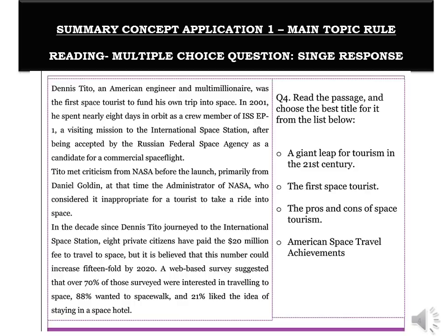A lot of people mark option A, but that option mentions tourism without the word 'space' — so it's an incomplete topic. It's not talking about Dennis Tito specifically, hence it is incomplete. Understanding this concept directly helps you nail your answer. Option B — 'The First Space Tourist' — asks: who is the first space tourist? Dennis Tito. Is he the focus of the passage? Yes — the top two paragraphs out of three are focused on him. Option C mentions pros and cons of space tourism, but there is nothing negative in this passage.